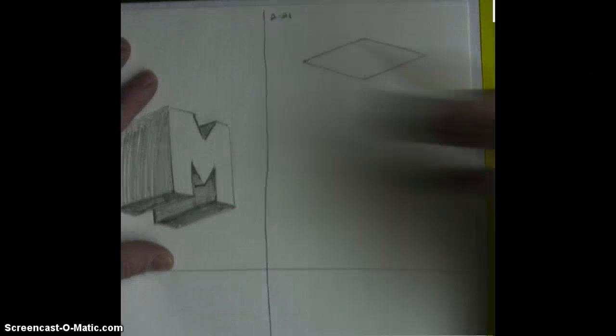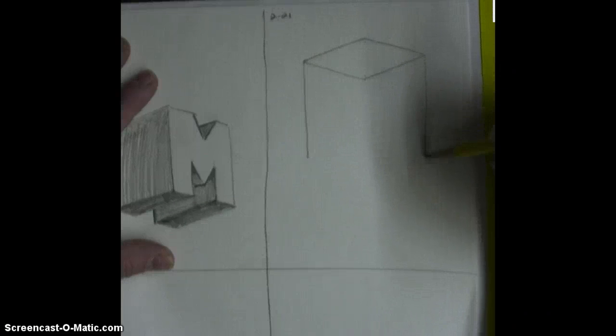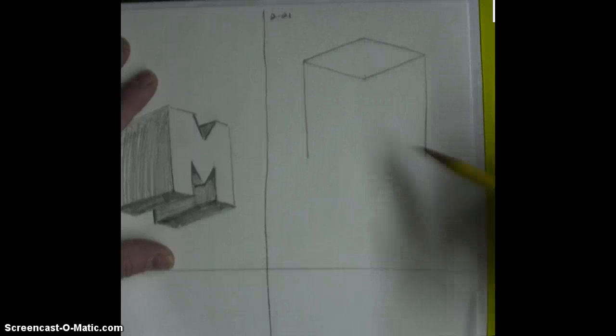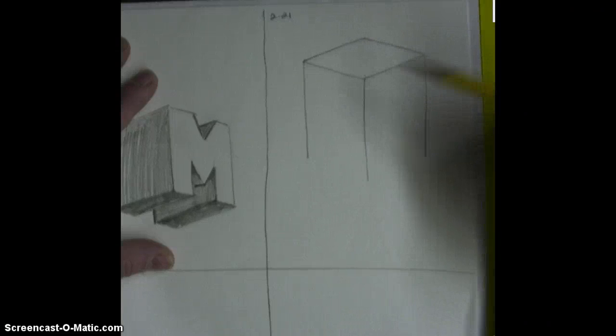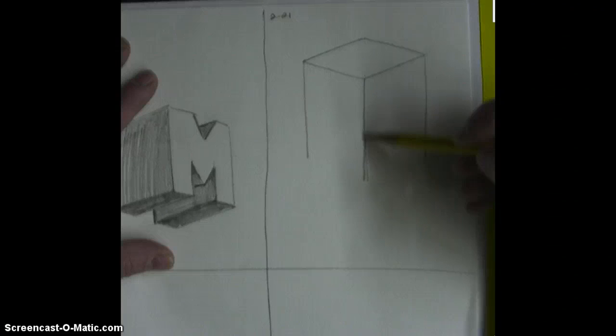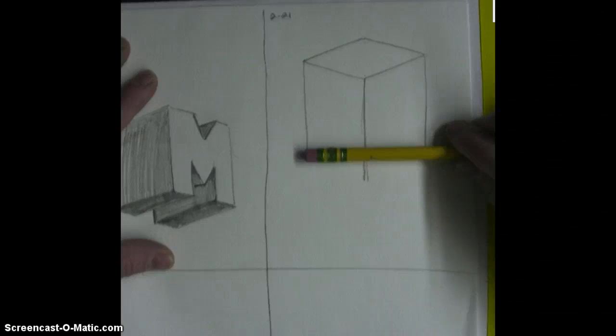Now I'm going to bring down the left side and the right side. They should come straight down and be equal in length. The middle should come down straight and be just a little bit longer than the other two. If you're not sure, just line your pencil up.